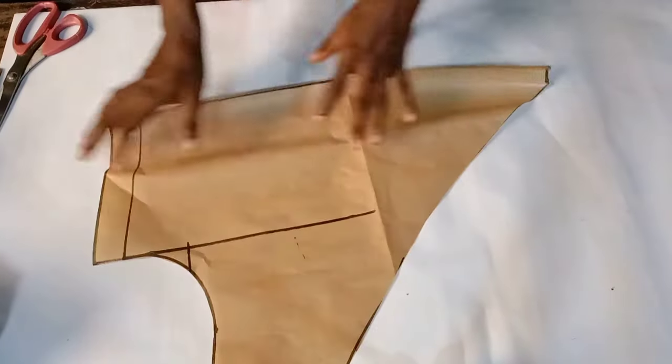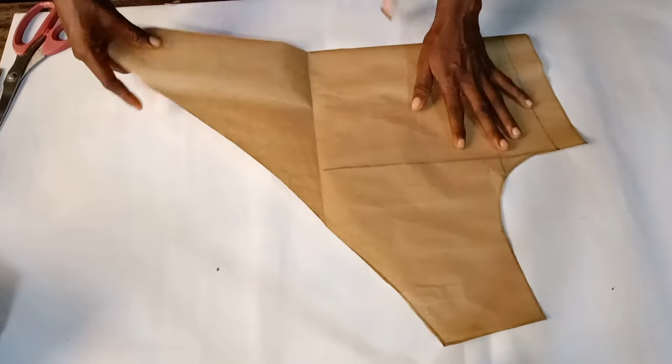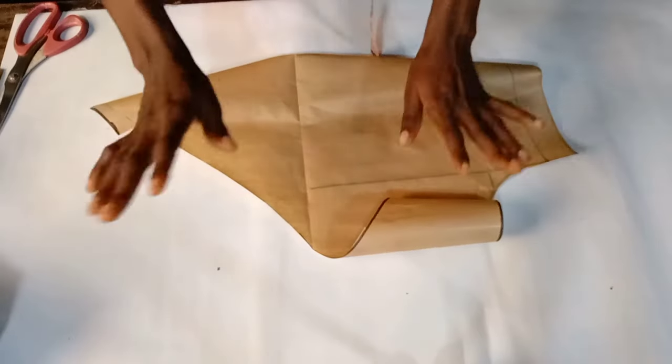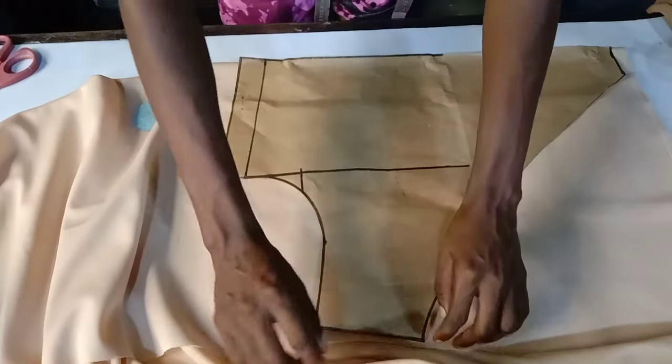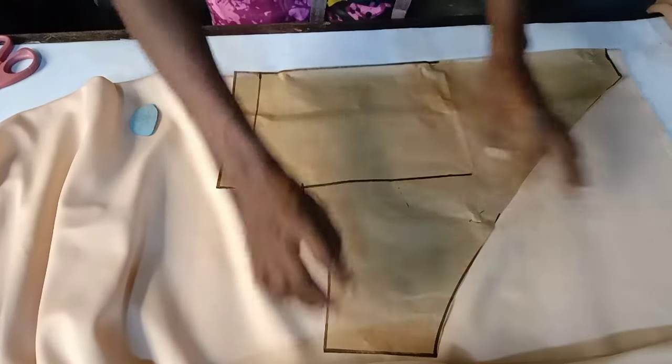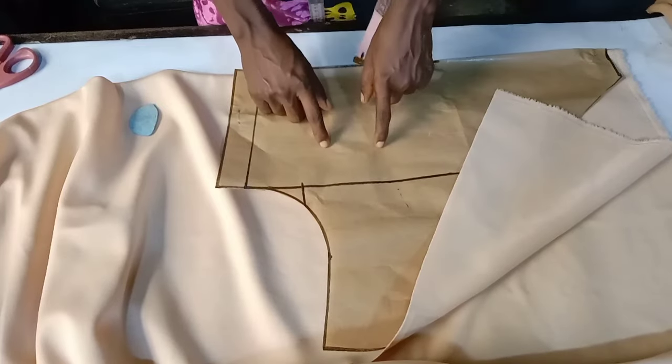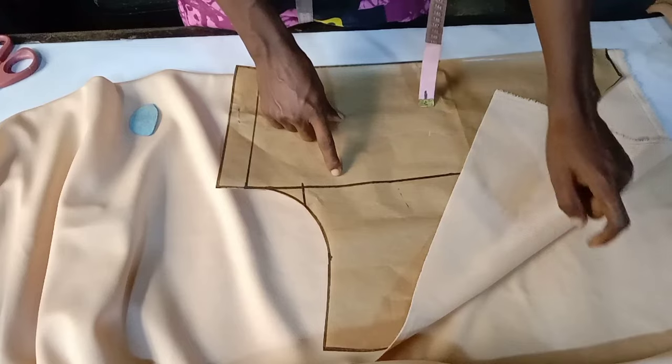So this part is discarded, this part is what we're going to use. I'll place it on the fabric now to cut two of this, one for each side. So guys, I've placed the pattern paper on the fabric and the fabric is unfolded. If you're cutting out on your fabric, make sure the right sides are facing each other or the wrong sides are facing each other.